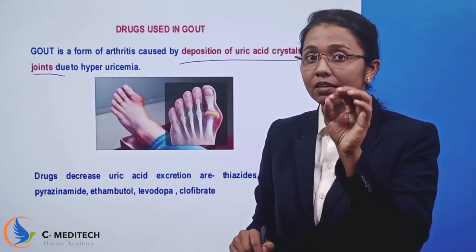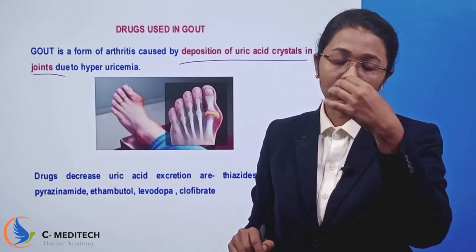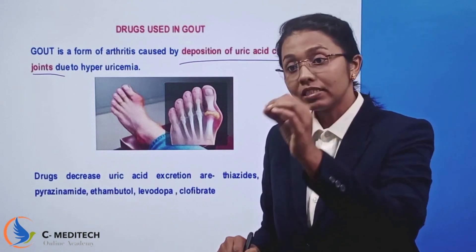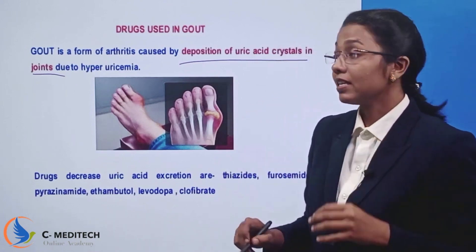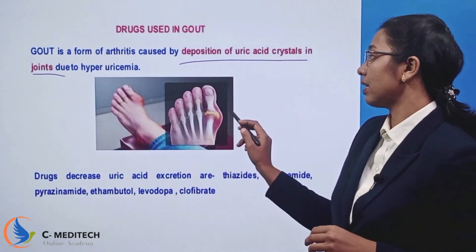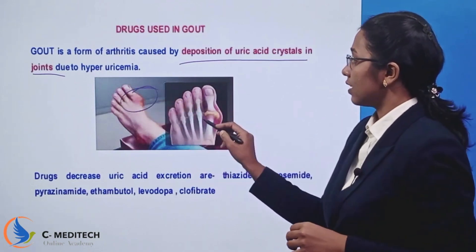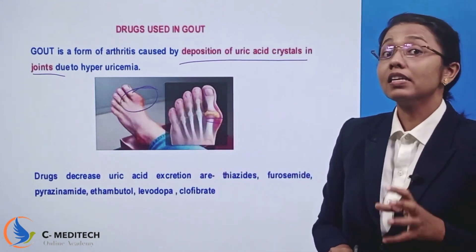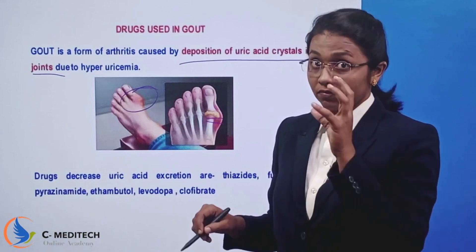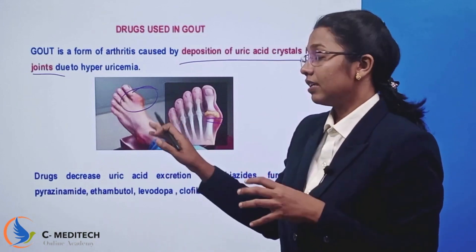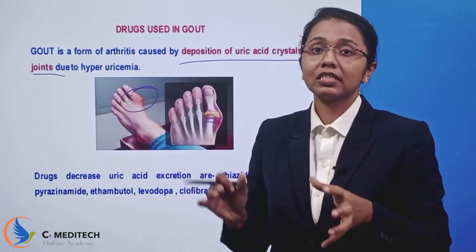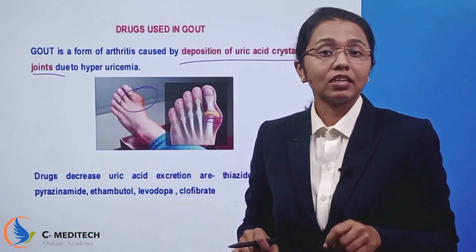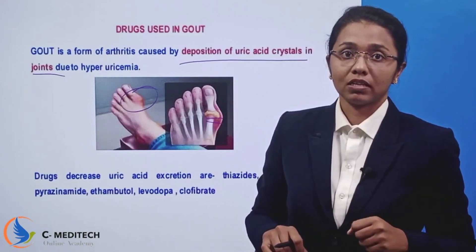If you have excess uric acid in the blood, it will be deposited in the joints. When uric acid accumulates, this leads to gout. So if you have high uric acid, then you will have gout.